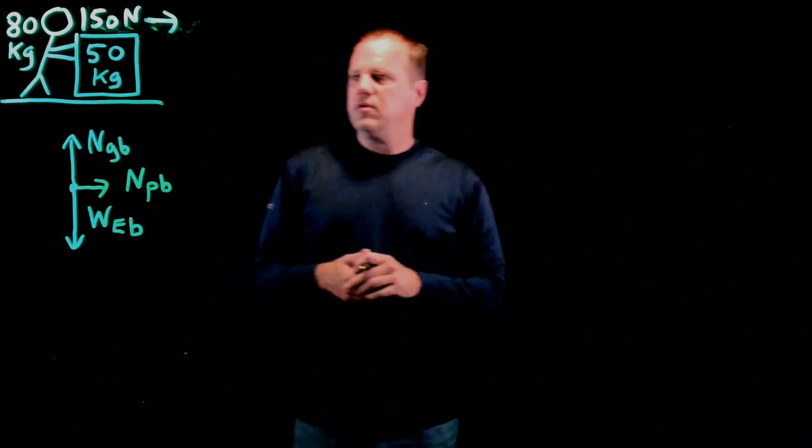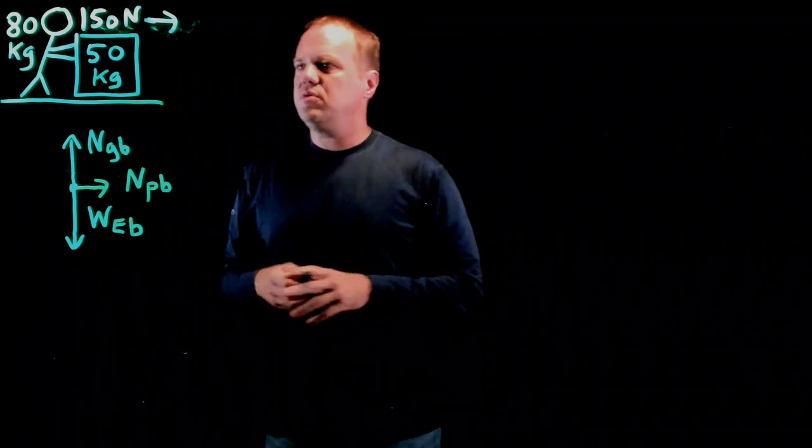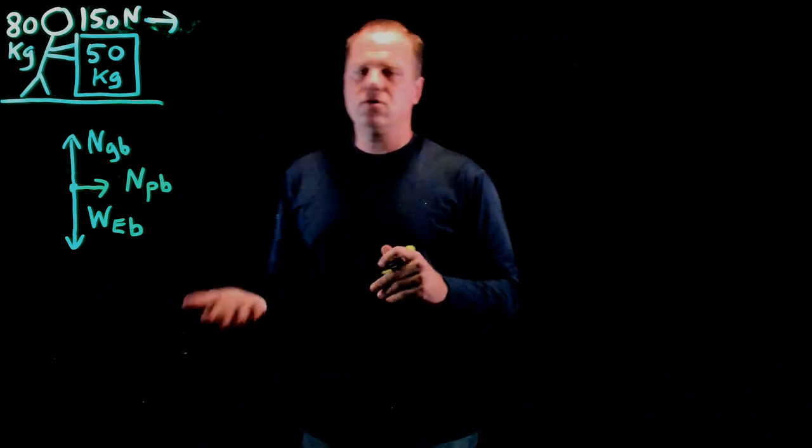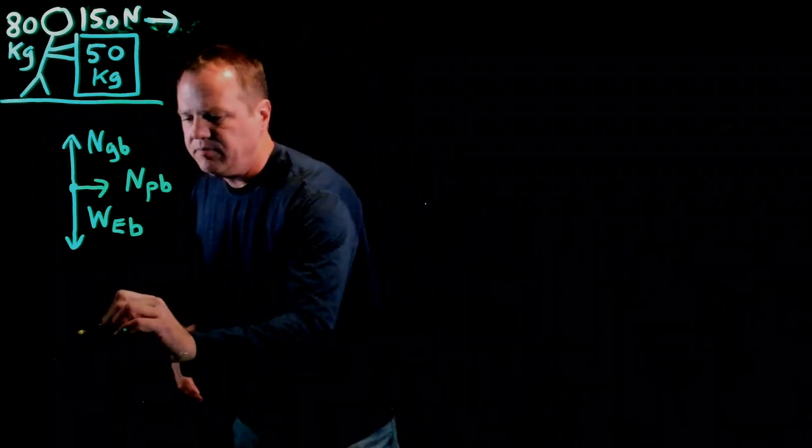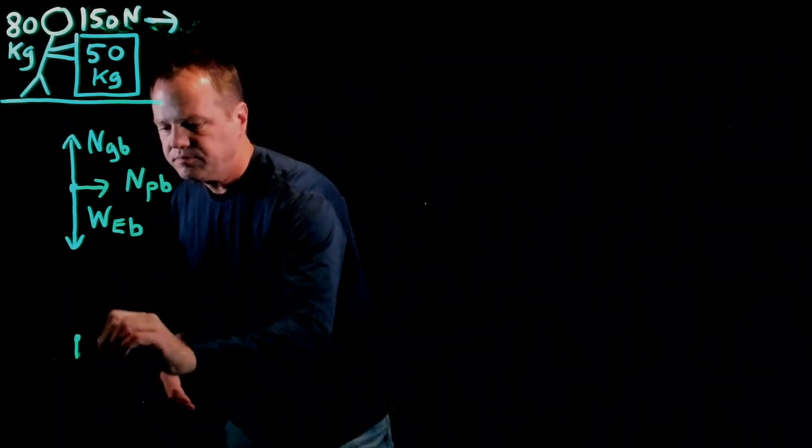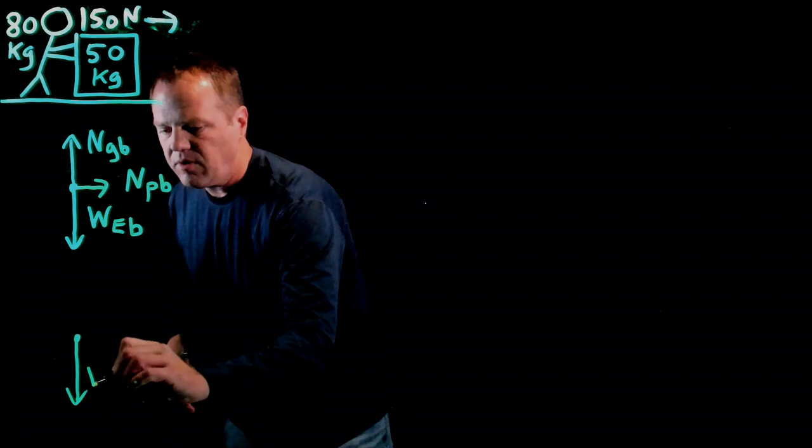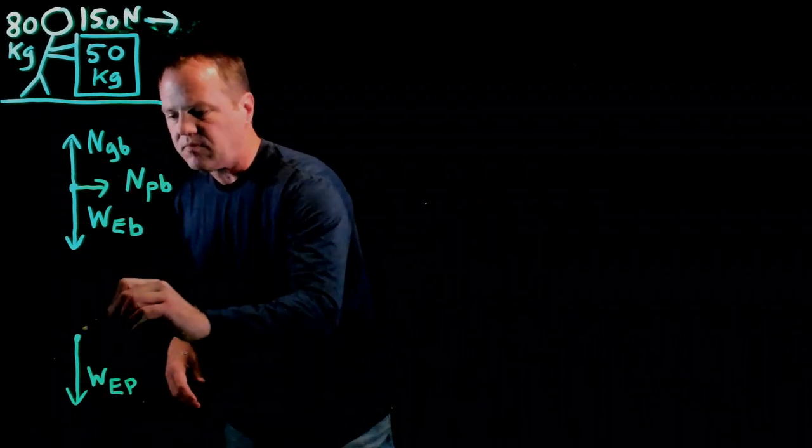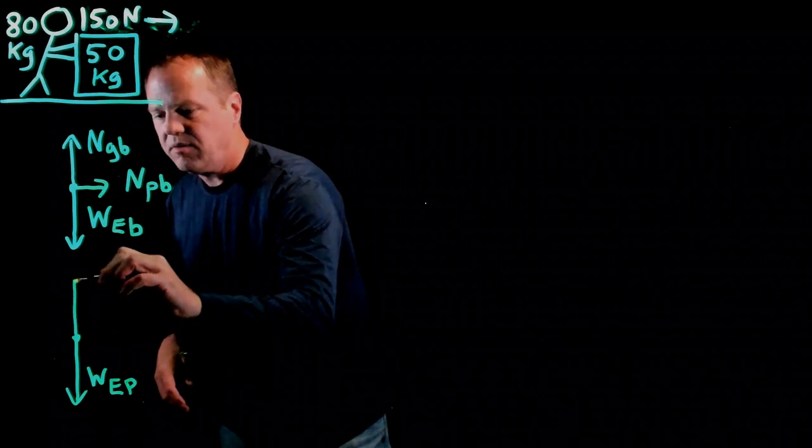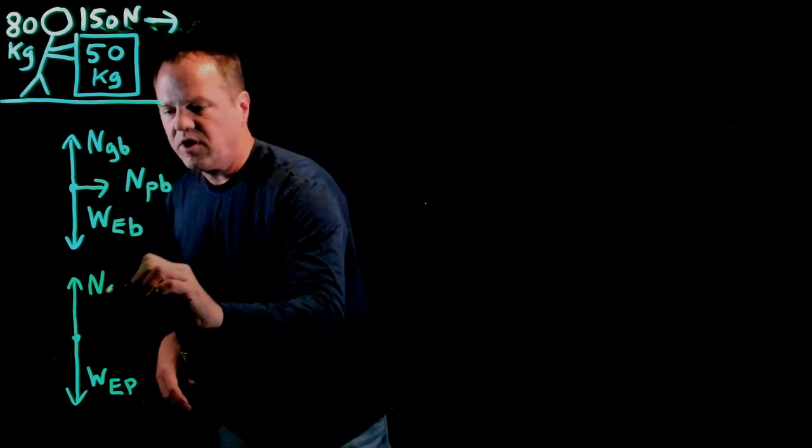Okay, so that's it if there's no friction between the block and the ground. So, let's draw a free body diagram for the person. So, person is pulled by the earth. Weight force due to the earth on the person. And then, just like with the block, we have a normal force from the ground.